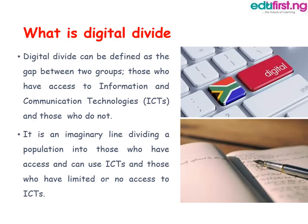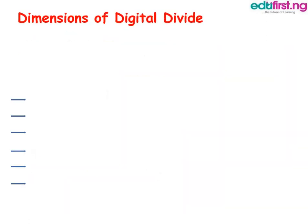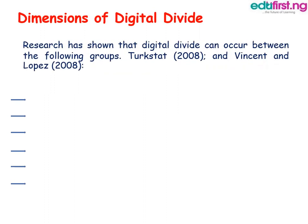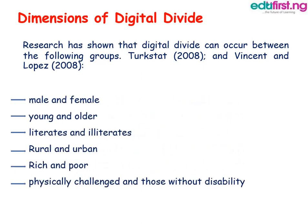Digital divide can occur in several dimensions according to research. One: male and female — males have shown a higher tendency to use digital devices. Among young and older people, the young tend to use more. Among literate and illiterate — the literate use technology more than the illiterate. Rural and urban — people dwelling in urban regions use more ICTs than those in the rural areas.